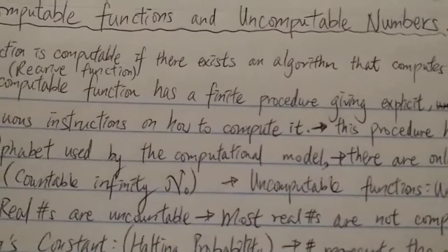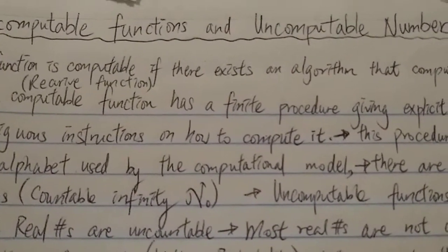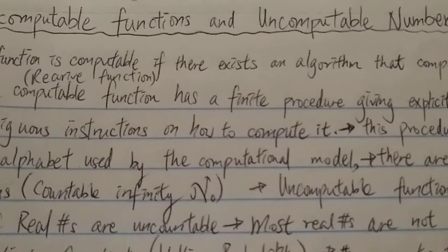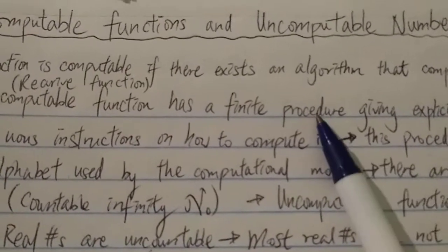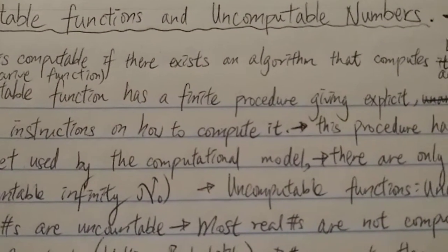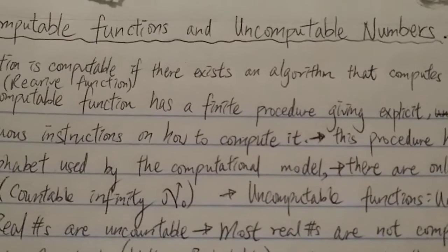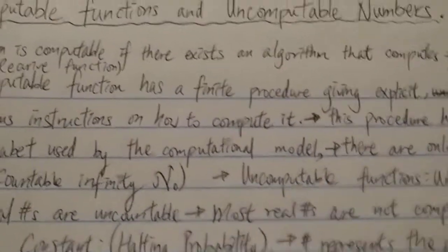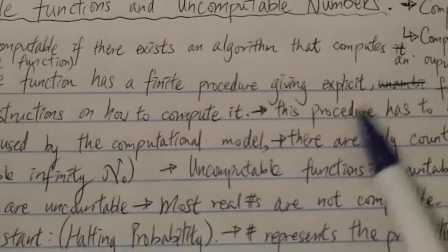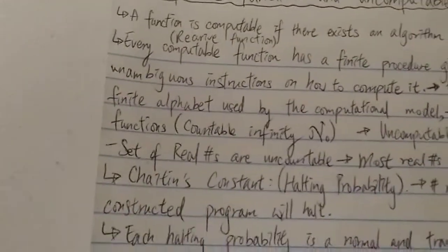For example, pi is actually a computable number because it has a finite procedure to calculate it, even though it takes an infinite amount of time to calculate pi. But the procedure is finite and explicit, so pi is a computable number.